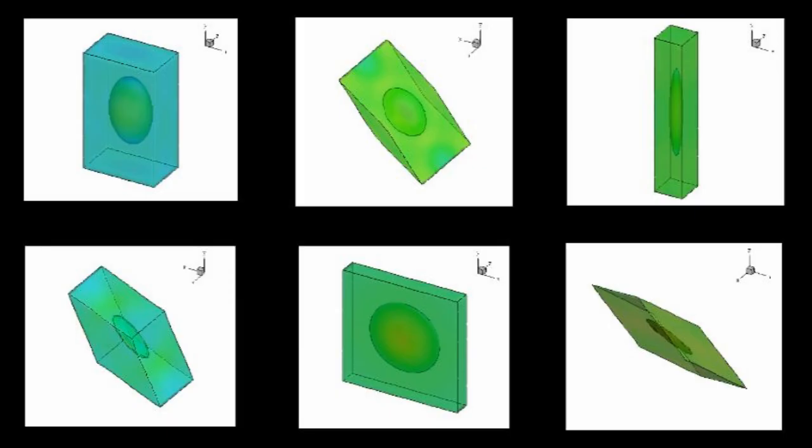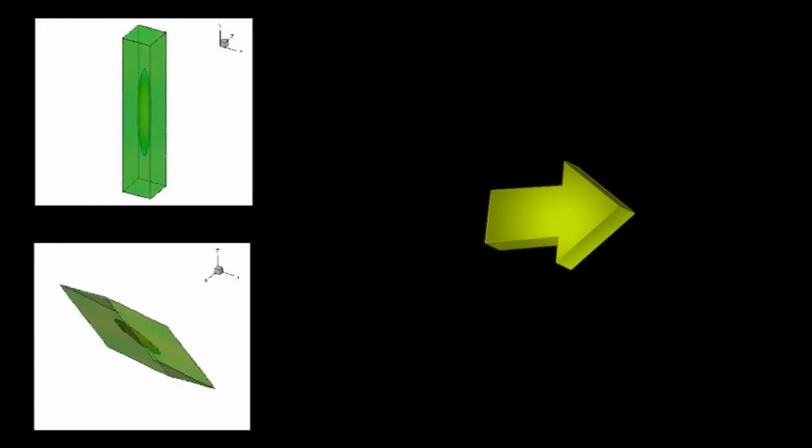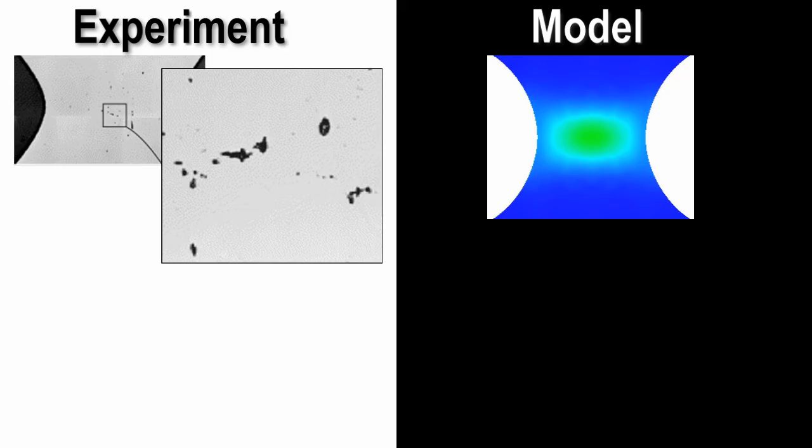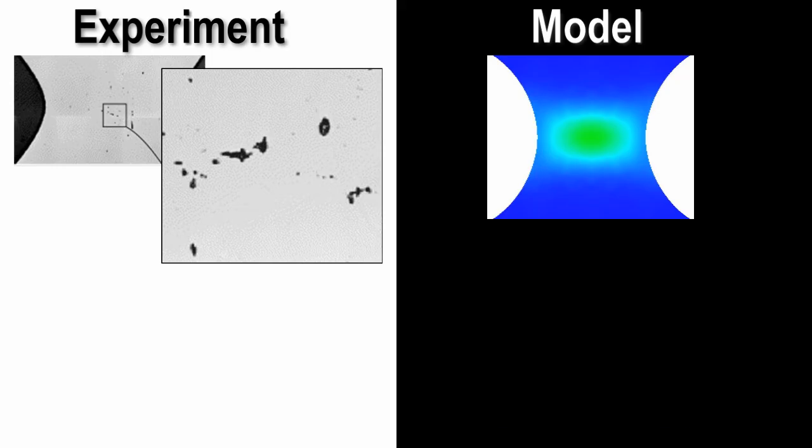So, by using a bunch of models of microscopic voids, I'm able to make predictions about how and when larger elements will fail. The truly amazing thing is that these predictions actually correspond to experiments. I'm able to show that damage starts to occur in the center of this element and leads to a crack, which is the same as seen in experiments.